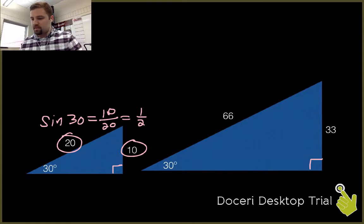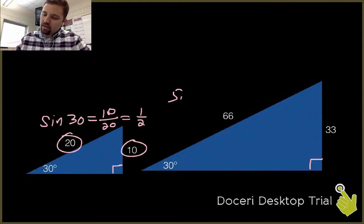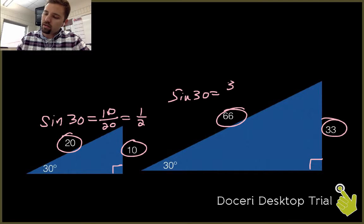And so that's neat. Let's try this other bigger triangle here. So once again we're looking at 30 degrees, we want to find the sine of 30 degrees. So we take sine of 30, and that is equal to the opposite divided by the hypotenuse. That's 33 over 66. That also simplifies to a half.